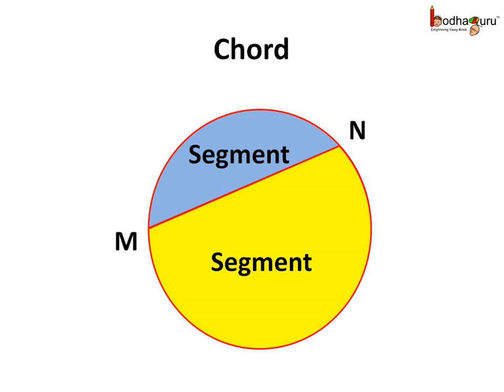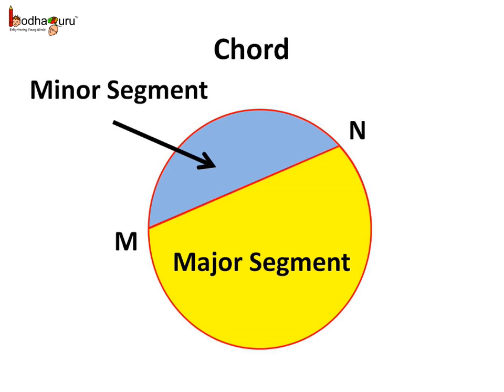You know every chord divides the circle into two parts, shown here by two different colors. One blue colored part and one yellow colored part. Each of these regions is called a segment. The region above chord MN is smaller and it is called the minor segment. The region below the chord MN is larger and it is called the major segment.